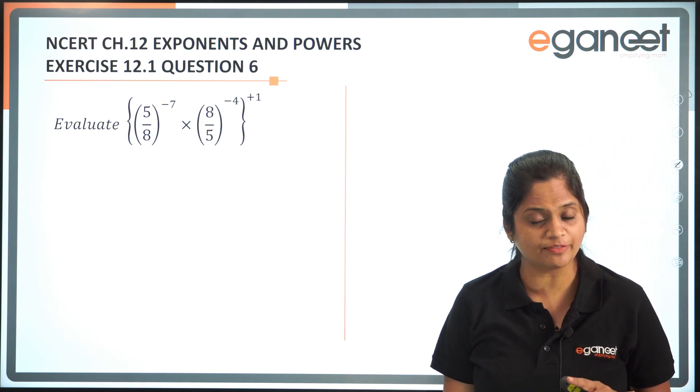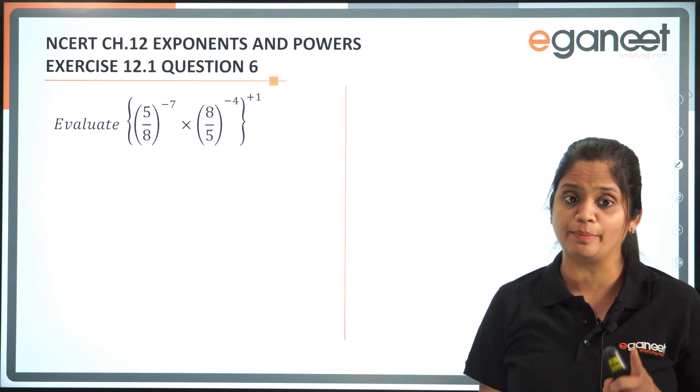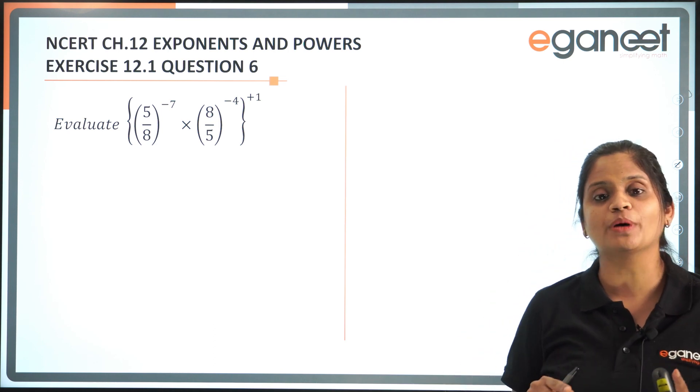5 by 8 raised to power minus 7 multiplied with 8 by 5 raised to power minus 4, and whole is raised to power of plus 1.